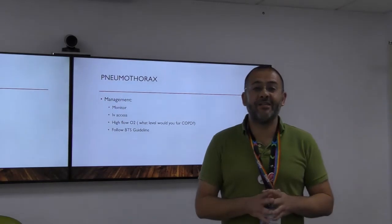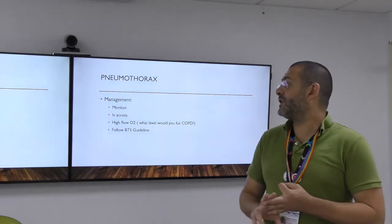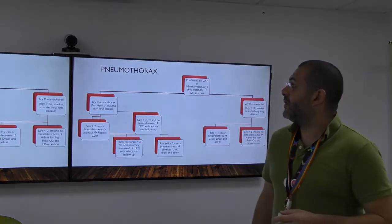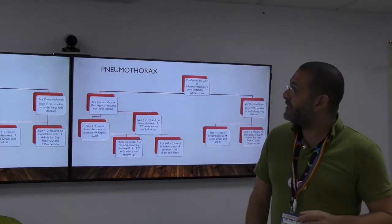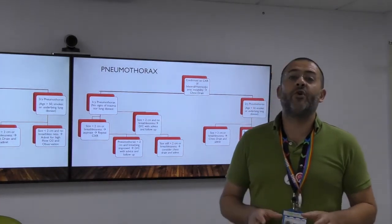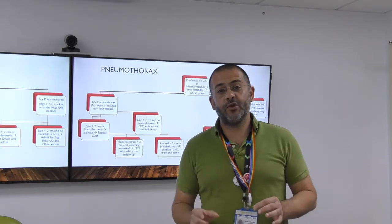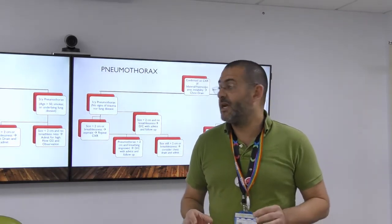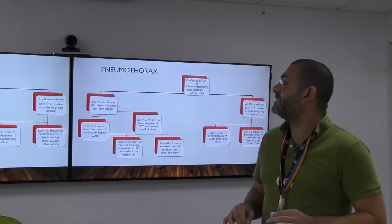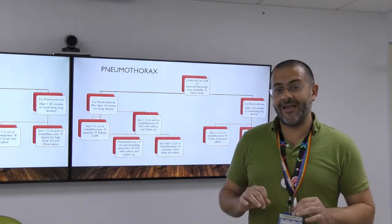How do we manage? Monitor the patient, get IV access, give oxygen, and follow the BTS guidelines. We measure the pneumothorax from the hilum in centimeters. If bilateral with hemodynamic instability, proceed immediately to chest drains. For a confirmed pneumothorax on chest X-ray: if primary and less than two centimeters with no breathlessness, observe for a short time and consider discharge with follow-up. If more than two centimeters or breathlessness is present, proceed to aspiration and repeat the chest X-ray.